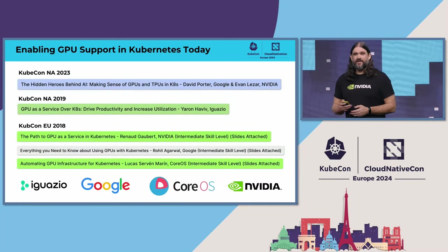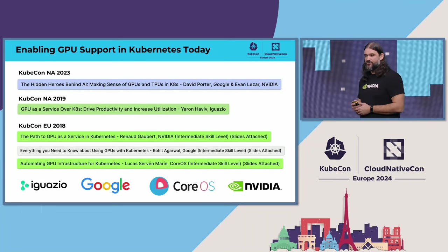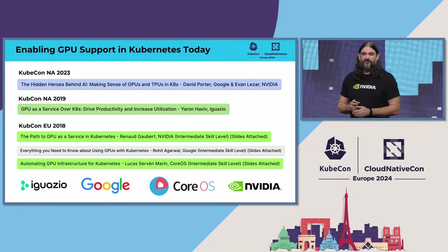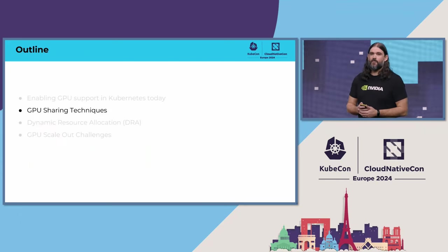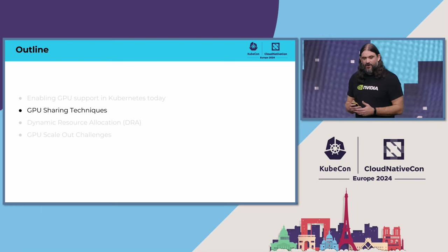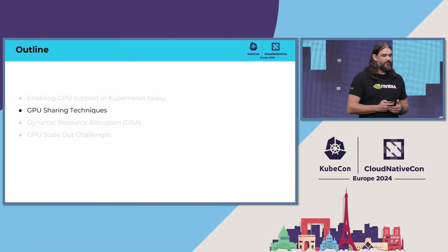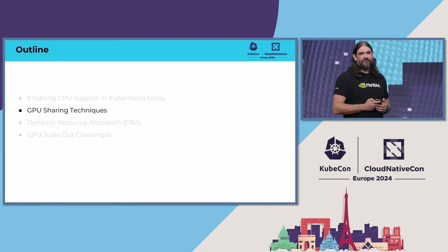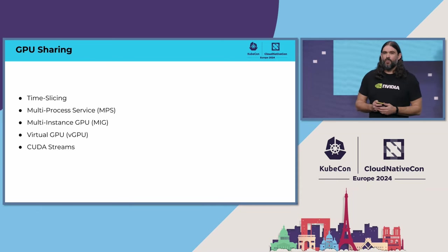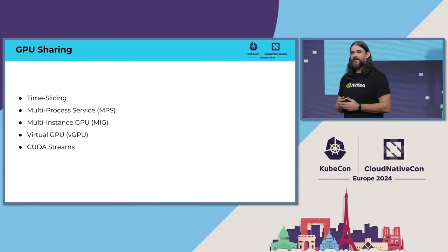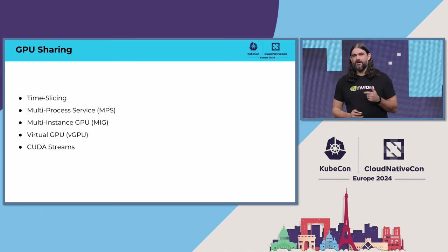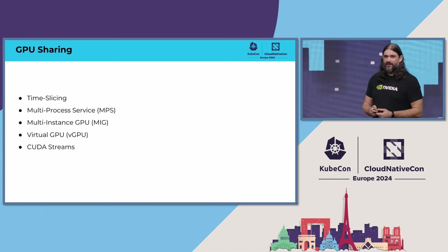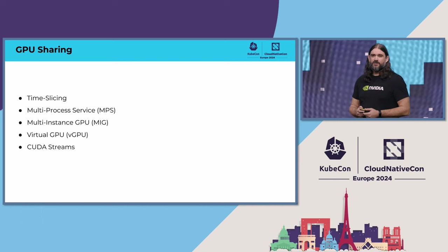For a history lesson on the evolution of GPU support in Kubernetes, I encourage you to check out talks from various organizations at past KubeCons. Now, there are five primary techniques that can be used to share GPUs amongst multiple workloads: time slicing, MPS, MIG, vGPUs, and CUDA streams.